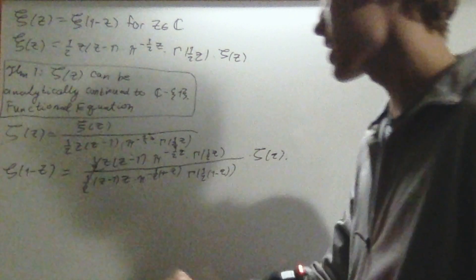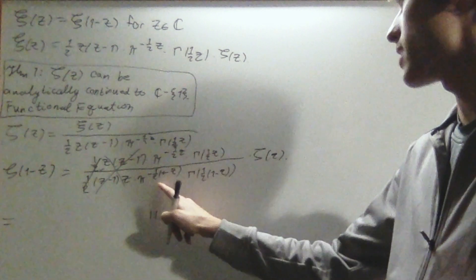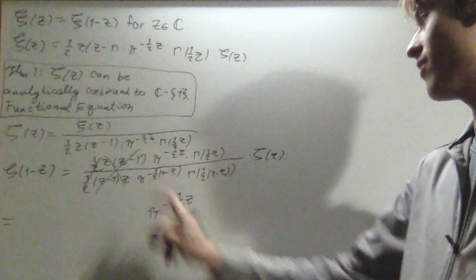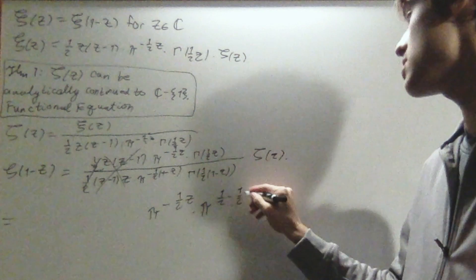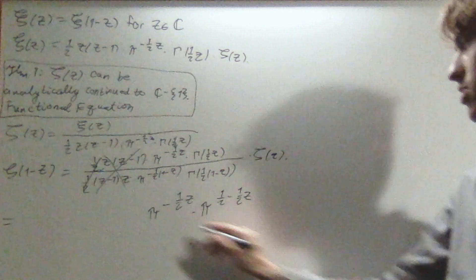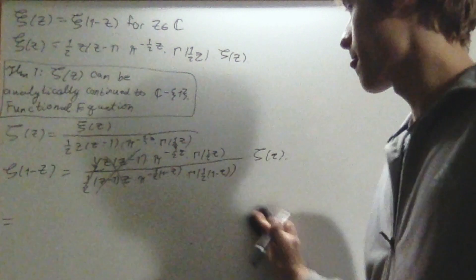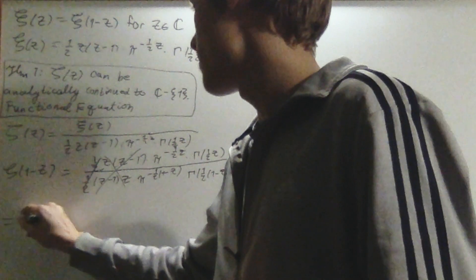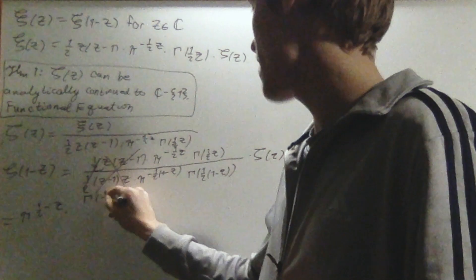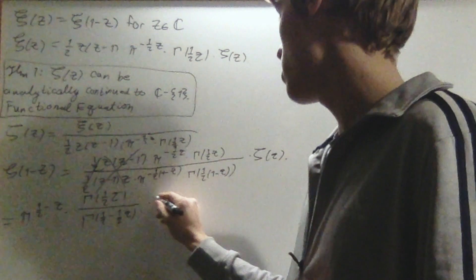Right there, the 1/2's cancel. The z's cancel. The (z-1)'s cancel. Now these two pi terms can combine: π^{-z/2} and π^{-(1-z)/2} from the denominator. Moving the denominator's π to the numerator gives π^{+(1-z)/2}, so adding exponents: π^{-z/2 + (1-z)/2} = π^{1/2 - z}. And then we have γ(z/2) over Γ(1/2 - z/2), times ζ(z).